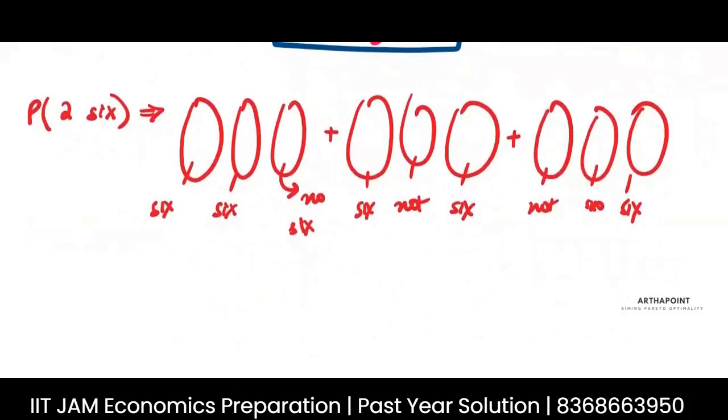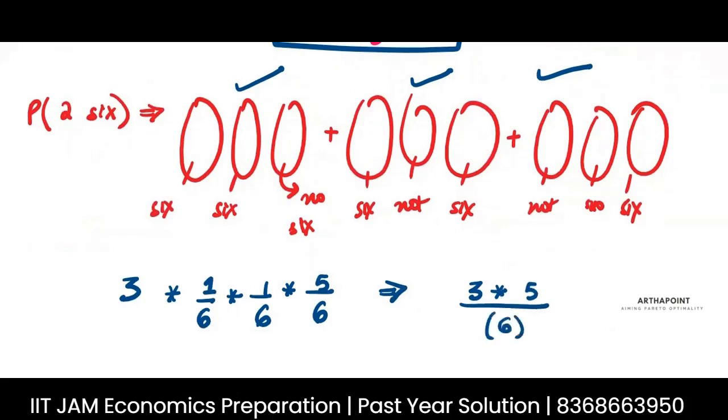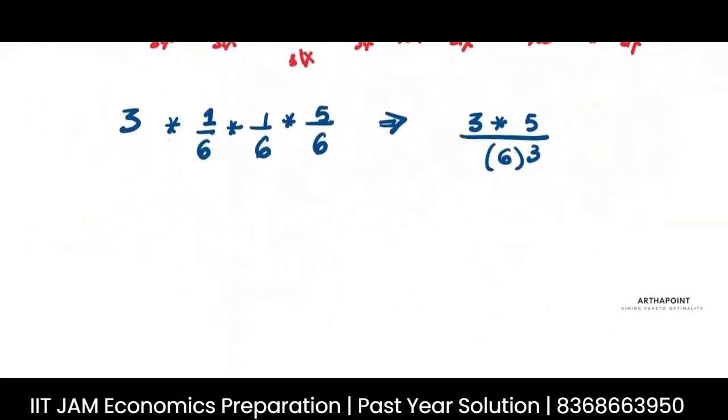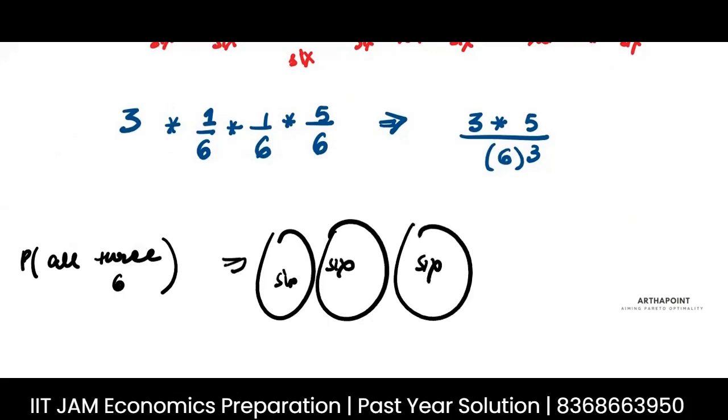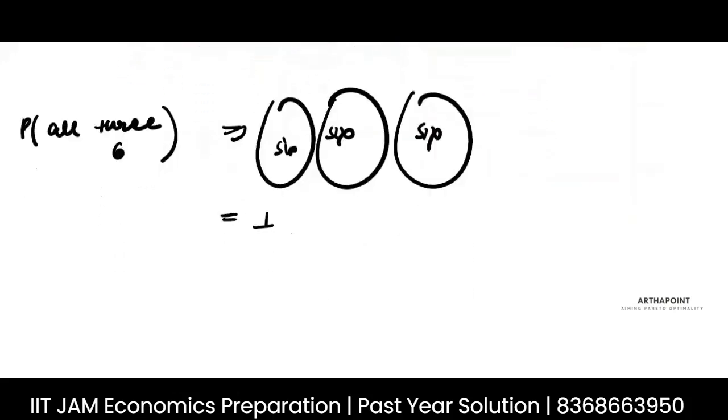The first and third gave you a six and the second didn't give you a six, or the first didn't give you a six and the second and third gave you a six. So again three cases. Probability of getting six would be 1 by 6, probability of getting six will be 1 by 6, probability of not getting six will be 5 by 6, and I will multiply this by 3 because there are three such times that can happen.